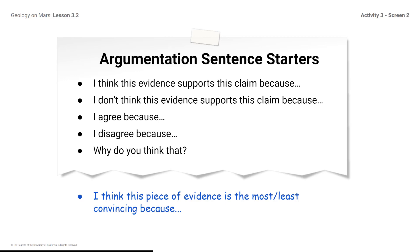Argumentation Sentence Starters: 'I think this evidence supports this claim because…' 'I don't think this evidence supports this claim because…' 'I agree because… I disagree because…' 'Why do you think that?' 'I think this piece of evidence is the most or least convincing because…' Use the sentence starters as you work. Remember to discuss your thinking about each piece of evidence. Don't just place the cards all at the top or all at the bottom of the evidence gradient. Instead, try to be very thoughtful about where you are placing each card and think about why you are placing them in those locations.